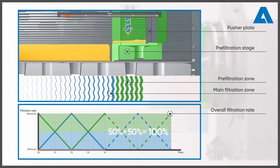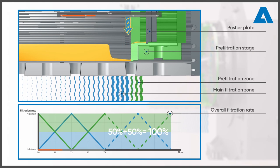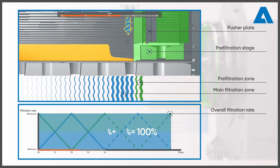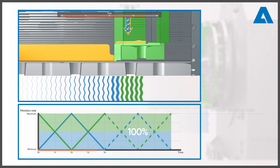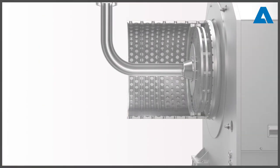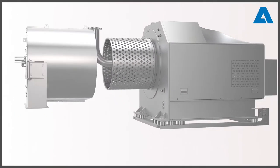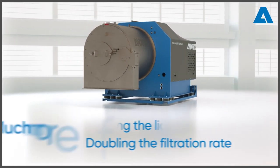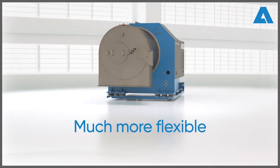The Krauss-Mafi pusher centrifuge with pre-filtration technology thus succeeds in doubling the filtration rate and hence also the liquid capacity. This makes the Krauss-Mafi pusher centrifuge with Andritz pre-filtration technology much more flexible in operation.